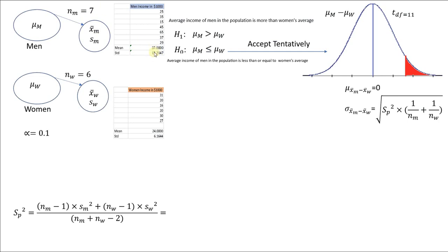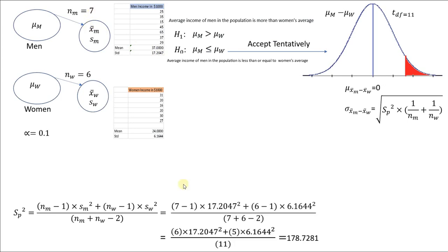The weight of it is 7 minus 1, because we lose one degree of freedom for every mean that we know. So when we are calculating it, 6 — that is, 7 minus 1 — is the weight of the variance of the first sample, which is 17.2047.